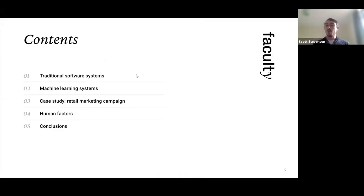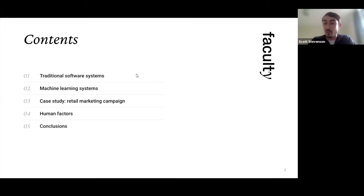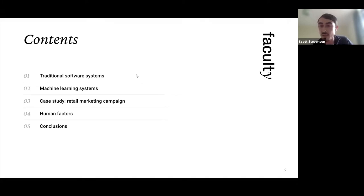The plan for today: I'll start with an introduction to machine learning systems monitoring and visibility, beginning with traditional software systems, since machine learning software systems are first and foremost software systems. Then I'll cover what additional requirements and techniques we've developed for ML systems specifically. Victor will then take us through a case study based on actual Faculty work — involving machine learning for running a marketing campaign for a large retailer — and we'll wrap up with learnings and conclusions.